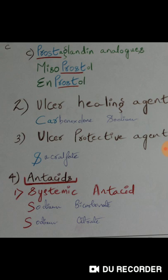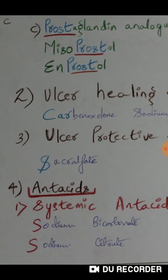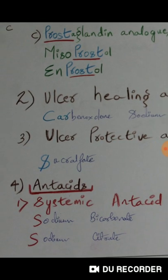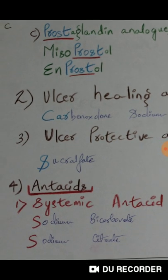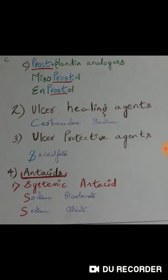Number four is antacids. There are two kinds: systemic and non-systemic antacids. For systemic antacids, 'systemic' starts with 'S,' same as sodium — so under systemic antacids you have sodium bicarbonate and sodium citrate.